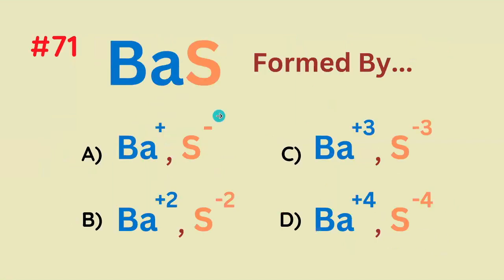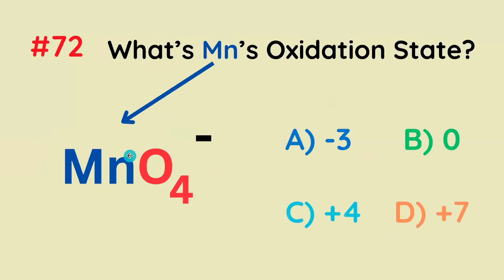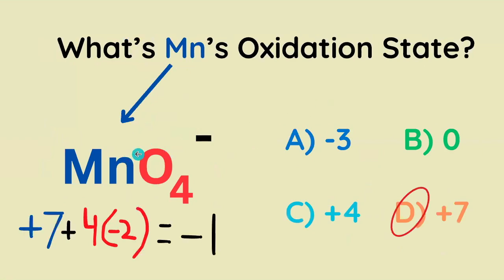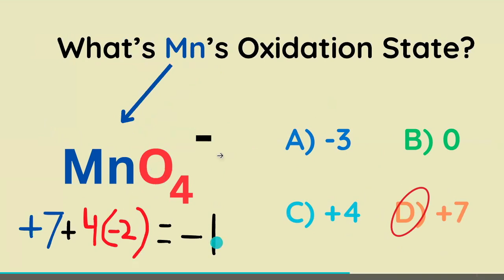Fish pass — BaS — is formed by what pair of ions? It's Ba²⁺ and S²⁻. What is Mn's oxidation state? The correct answer is positive 7, because oxygen is negative 2 and there are 4 of them contributing negative 8. The overall charge is negative 1, so to balance the equation, Mn must be positive 7.